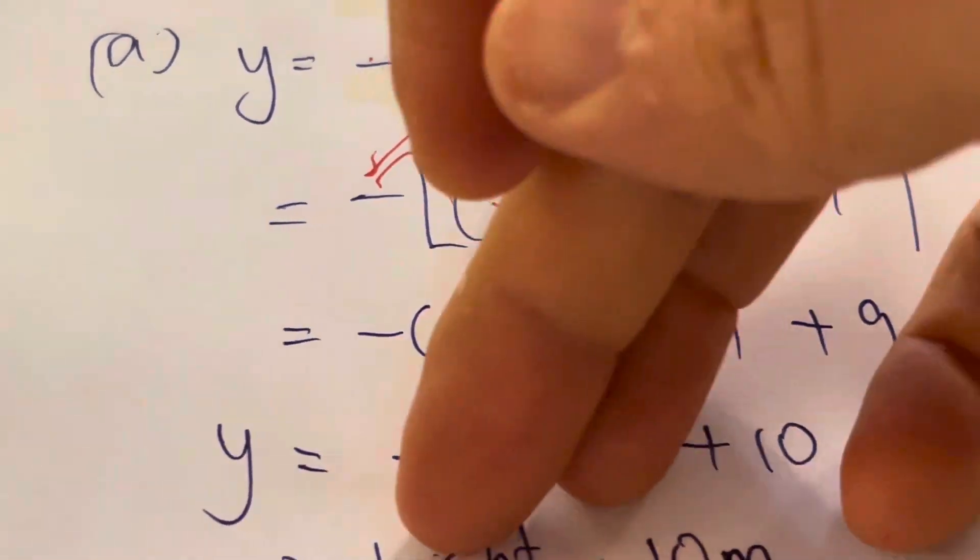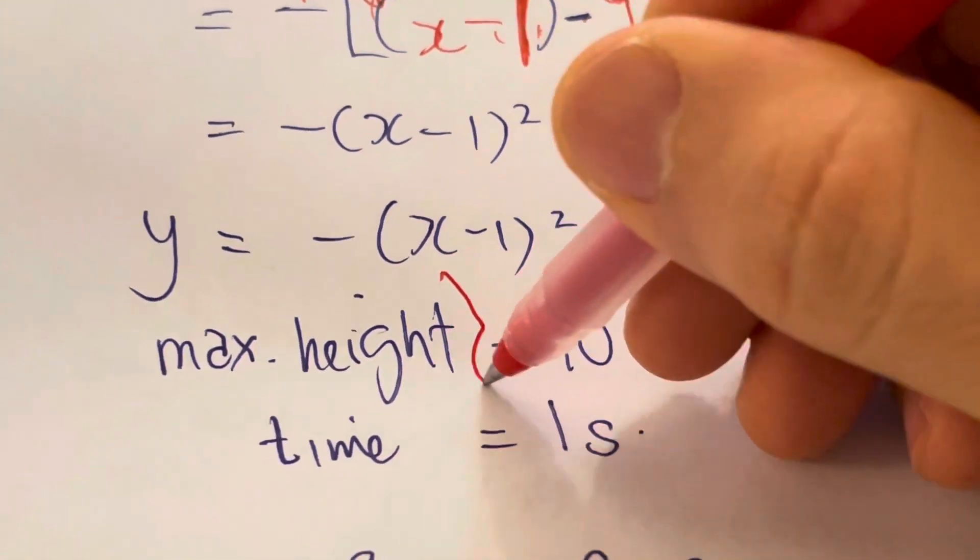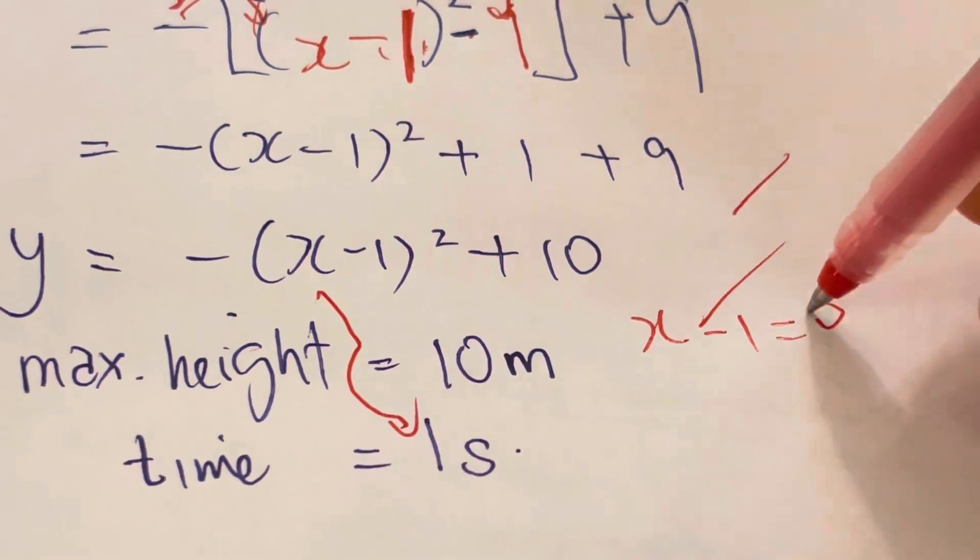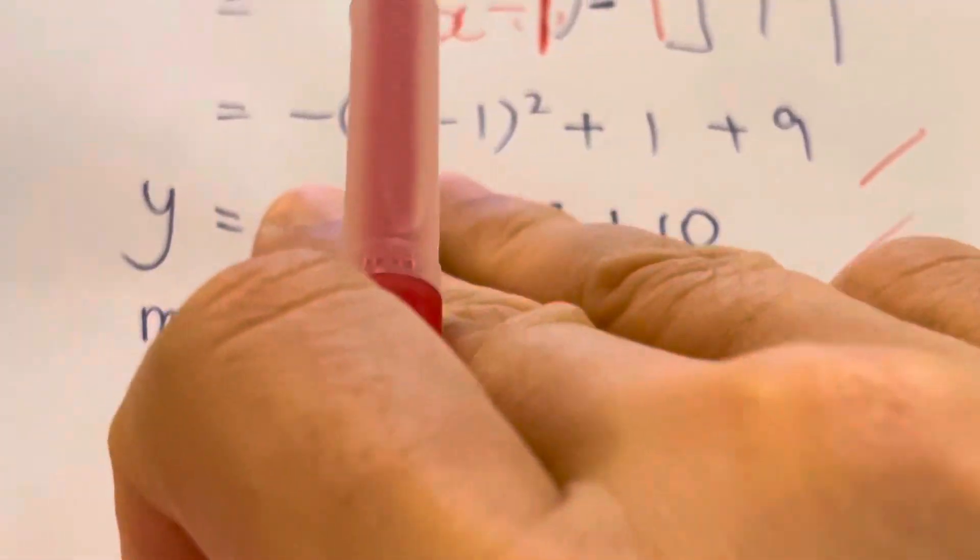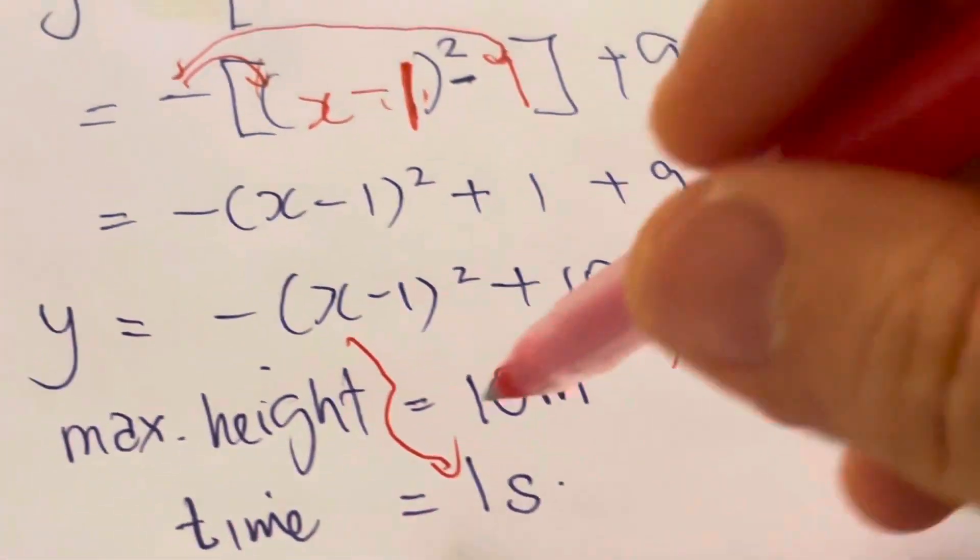And that means that, cover this up, this will be the maximum Y, which means the maximum height is this. And the time taken is 1 second, because you set this X minus 1 to be 0. This whole thing is 0, then you can get maximum value of 10, which means that X equals to 1. And your X, in this case, represents time.